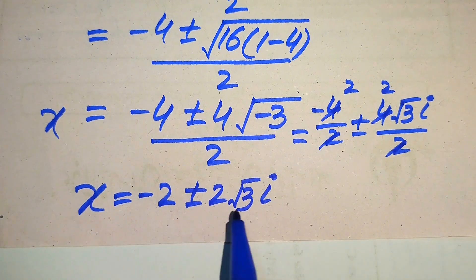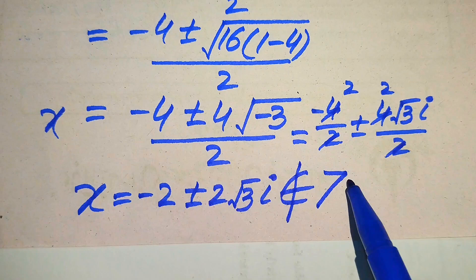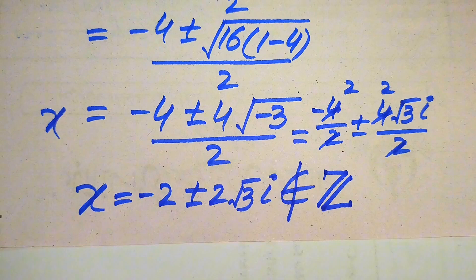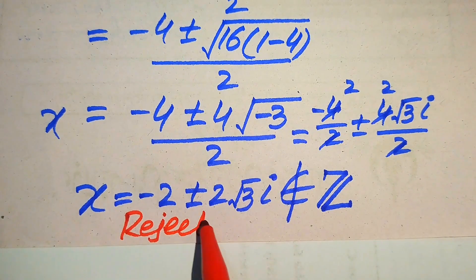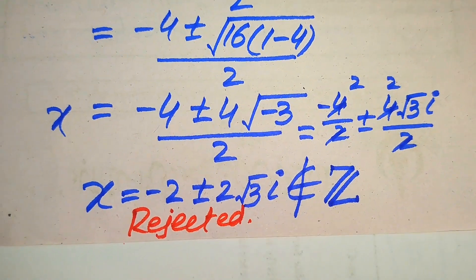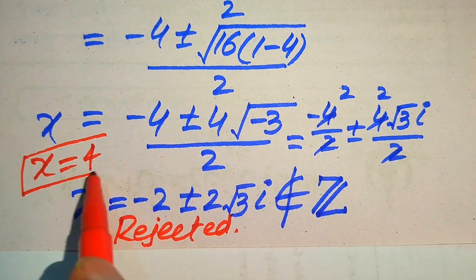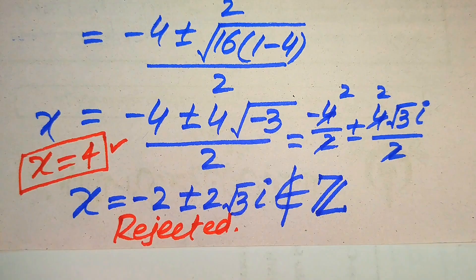These are complex roots and do not belong to the integers, since we are solving only for integer values of x. We reject this case. Therefore, there is only one integer solution to this problem: x = 4. This is the only integer solution of the given equation and the final answer. Thank you for watching — please subscribe to my channel for more videos.